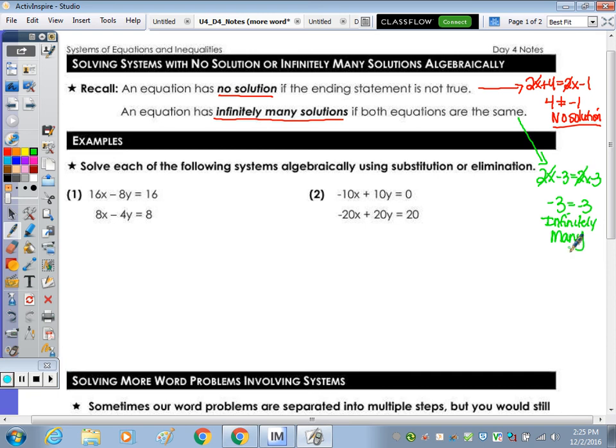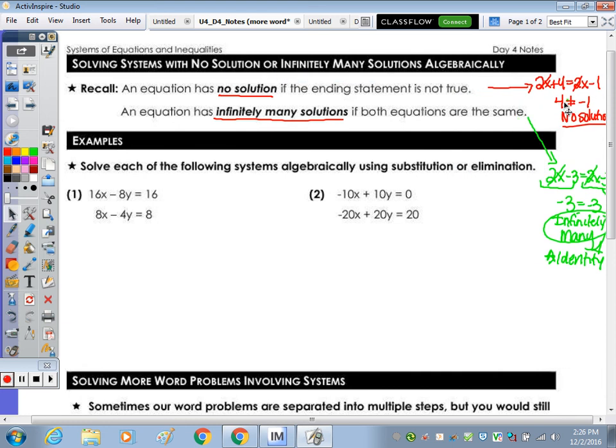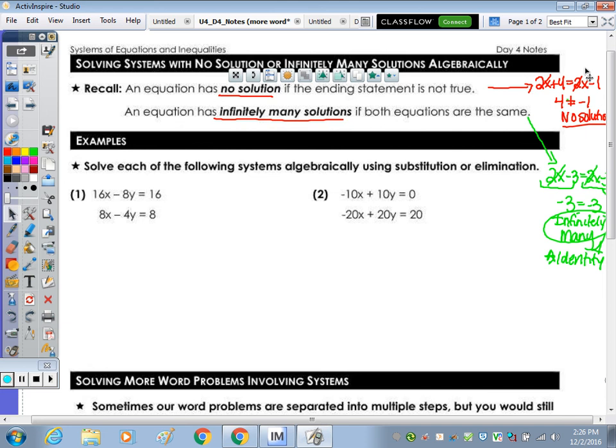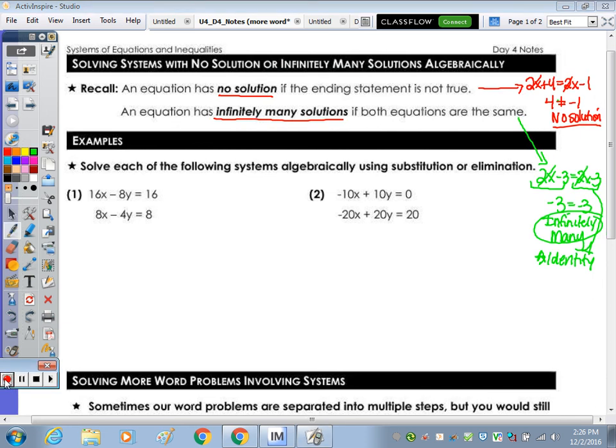It was an identity. We're going to see the same type of scenario happening. When the expressions are the same, we end up with infinitely many solutions. So in a system, when the statement comes out to be true, or the equations are the exact same equation, we're going to have infinitely many solutions. When it comes out to an unequal statement, or a false statement, we had no solution.